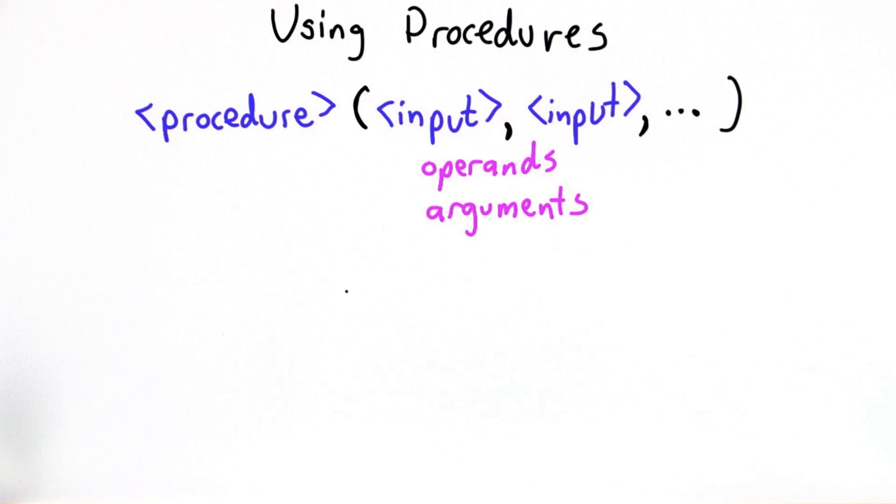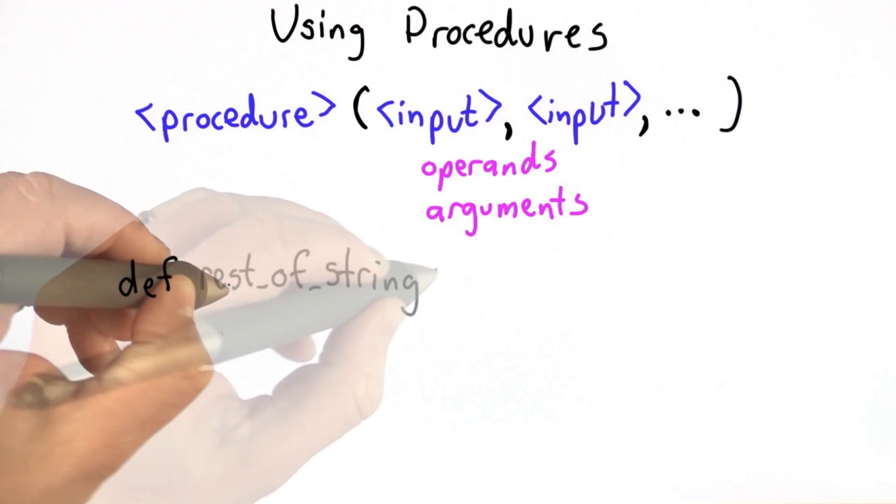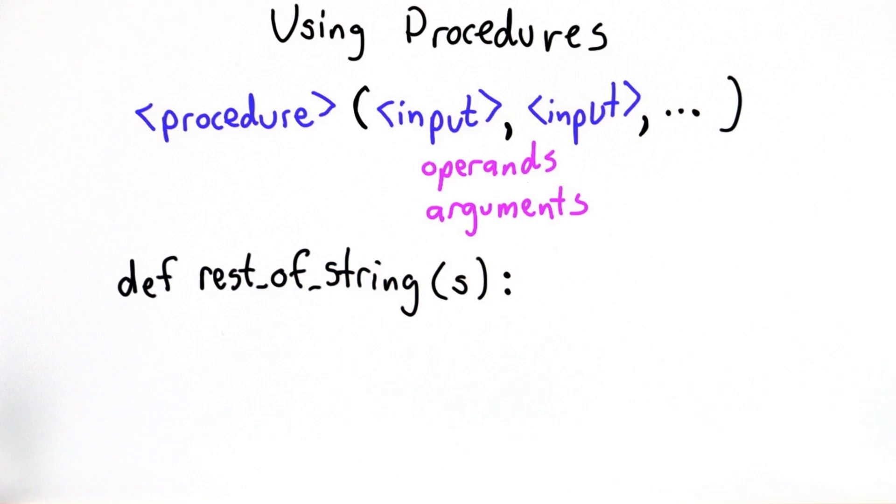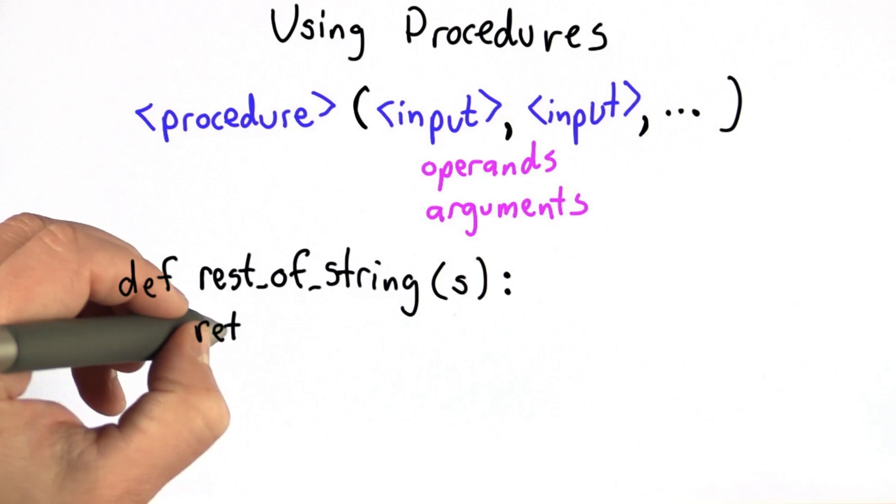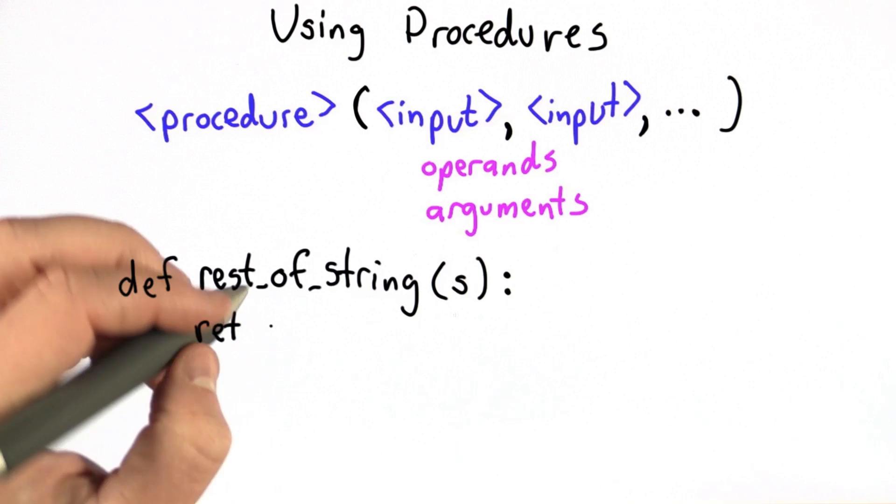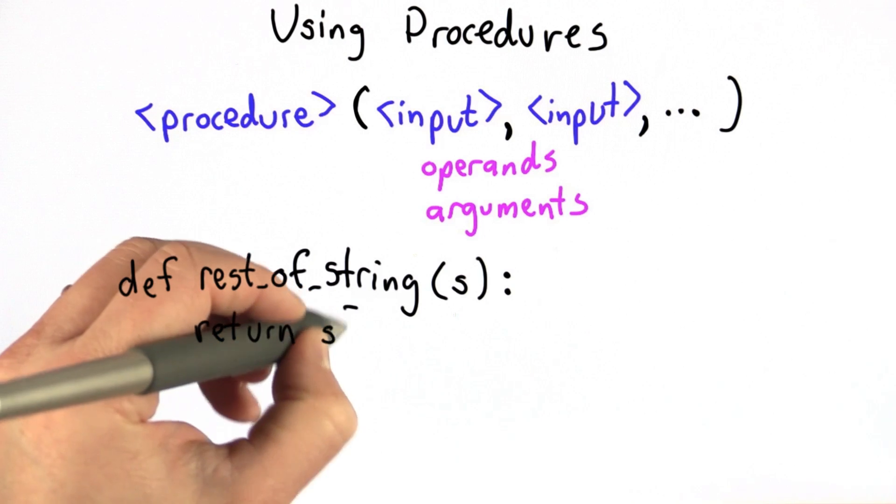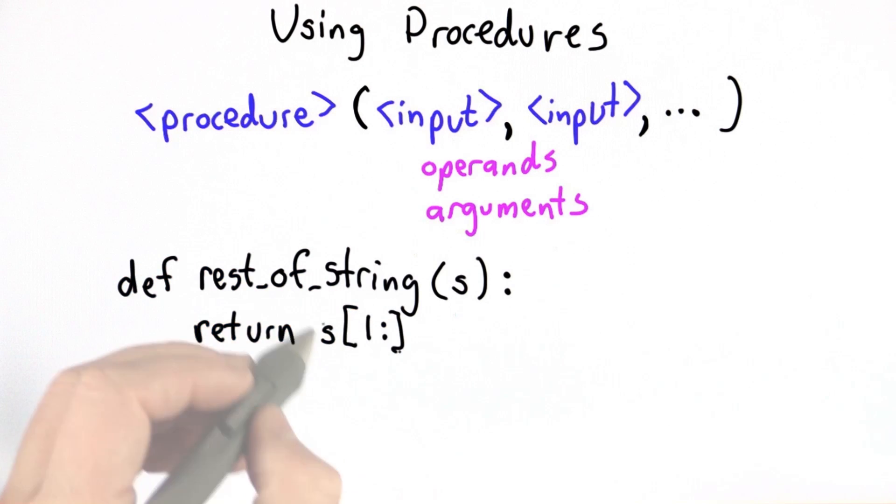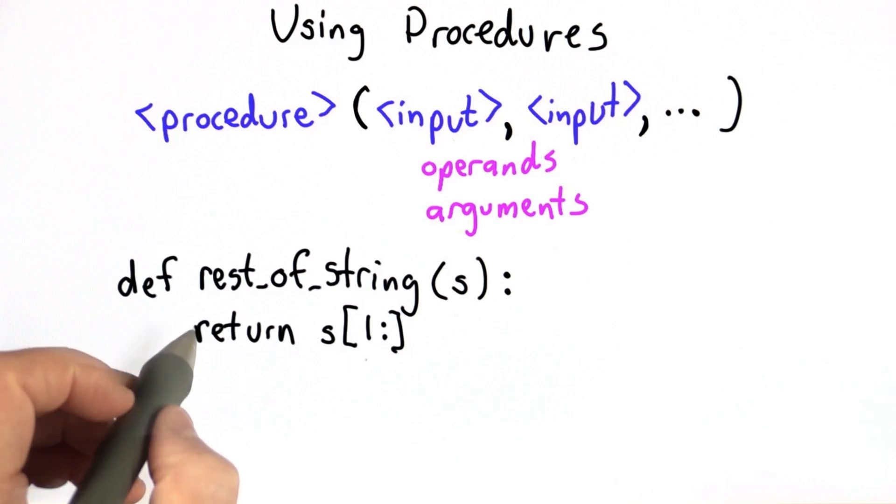So let's see how that works with a simple procedure. I'm going to define the procedure rest_of_string, and we'll give it the parameter s, so that means it takes one input, and we're going to use the name s to refer to the value of that input. And we'll make it return the string from the first character to the end. So we'll use the string indexing operator, return s[1:]. This will evaluate to the string with the first letter removed. So all strings from the position 1 until the end of the string. And that's what we return.